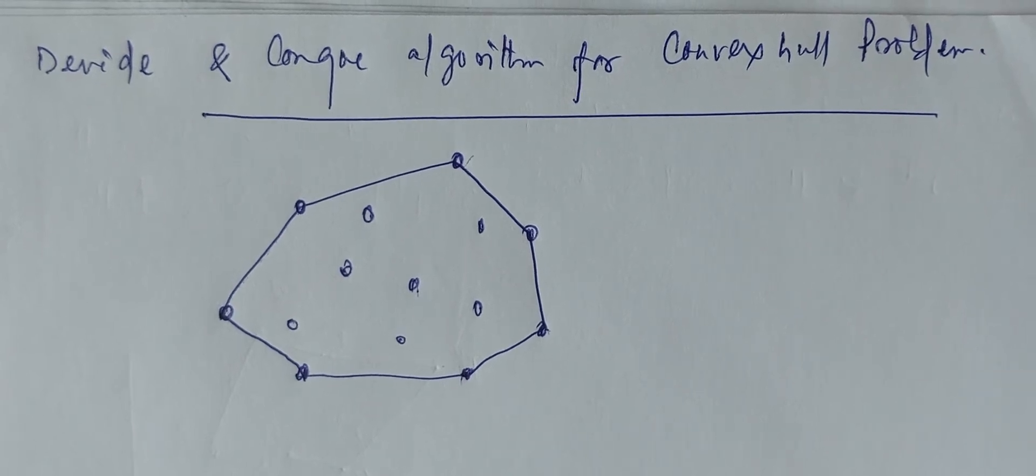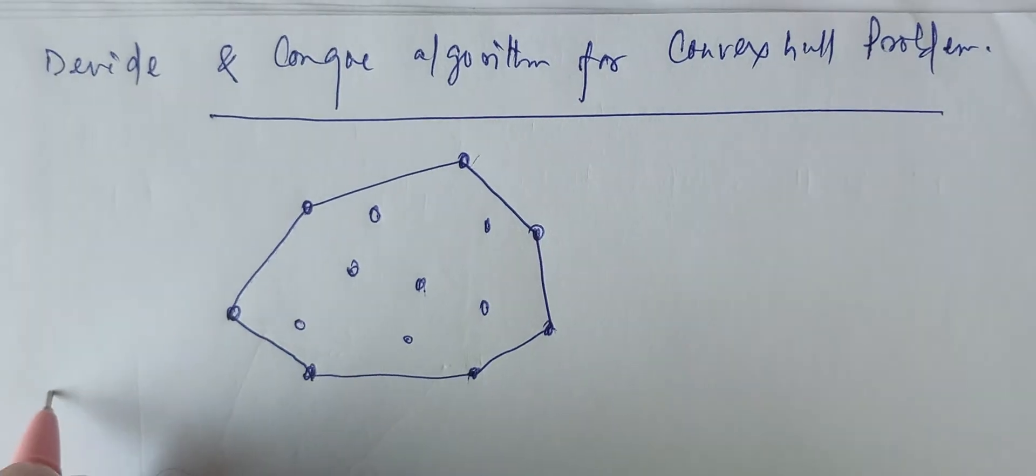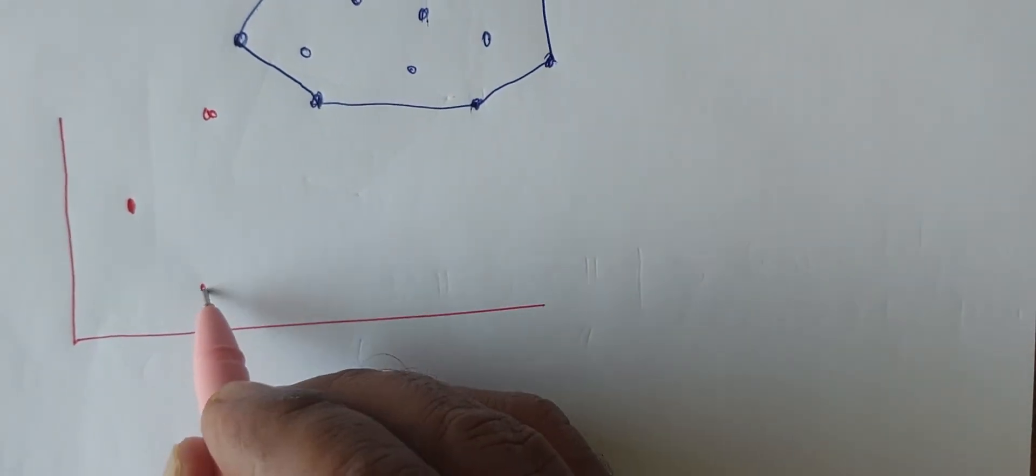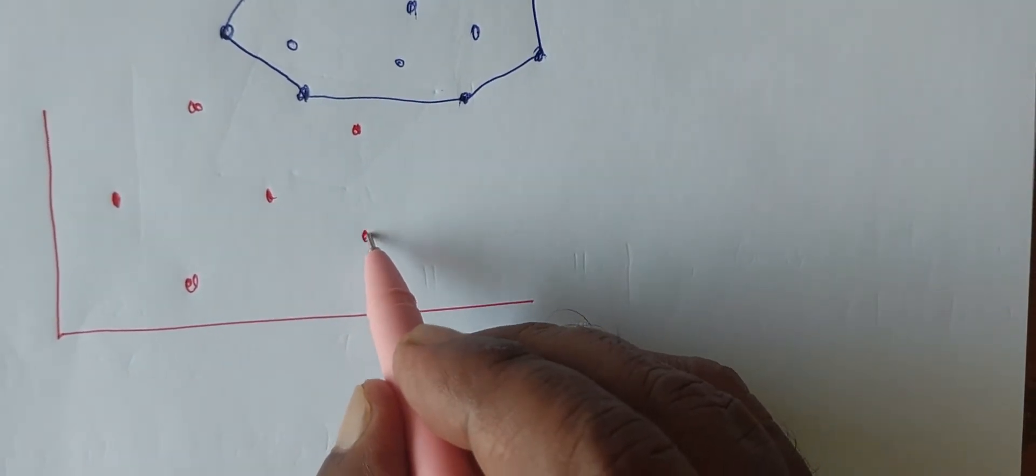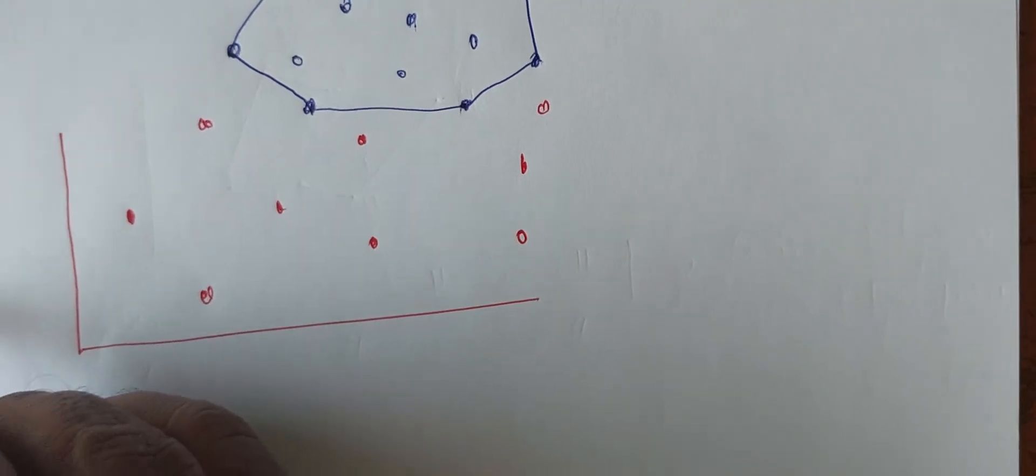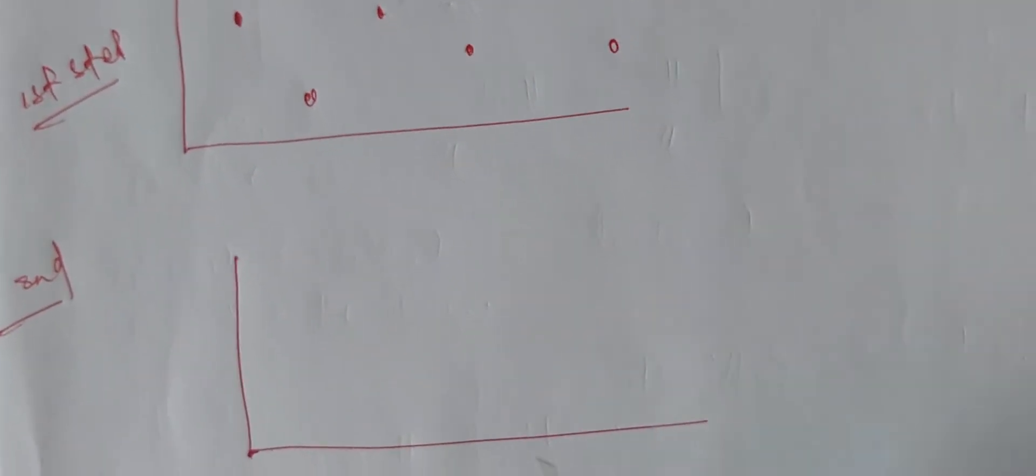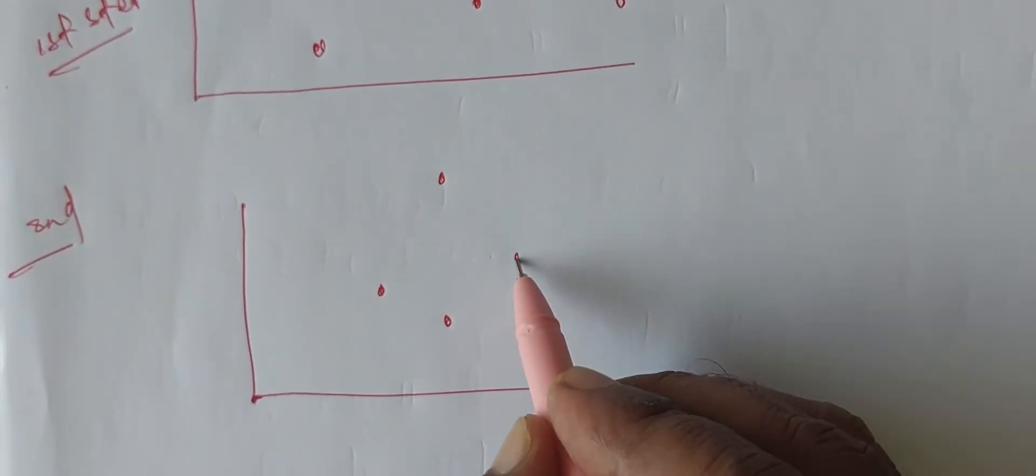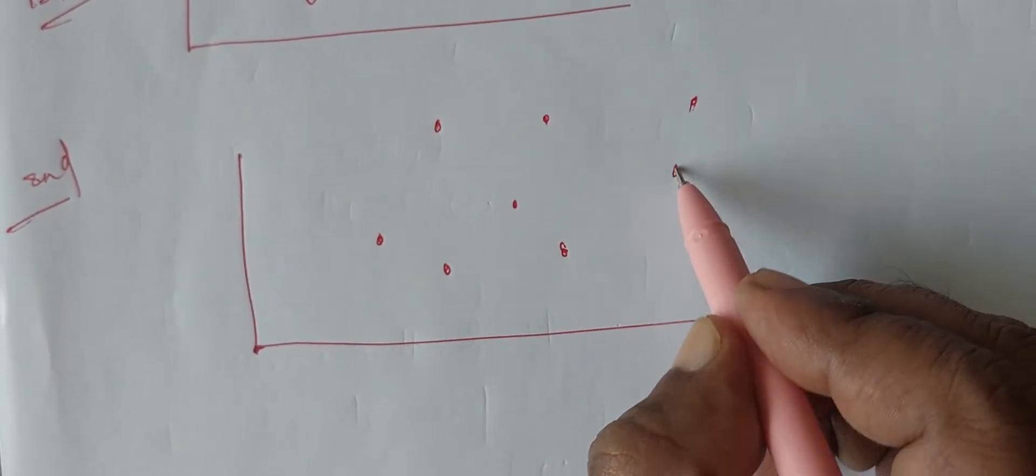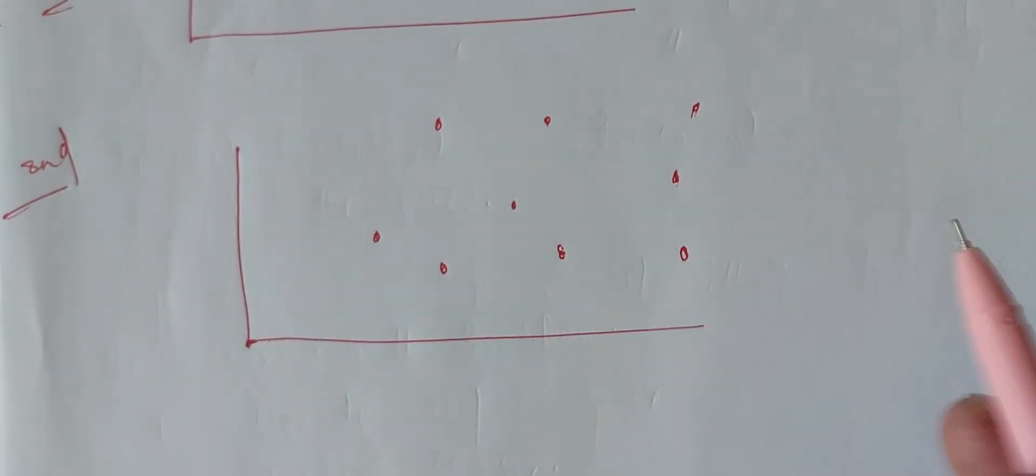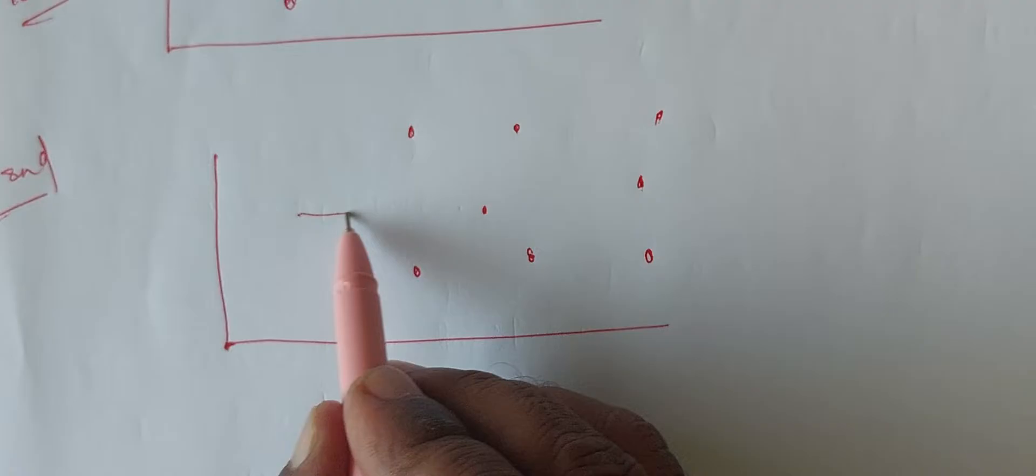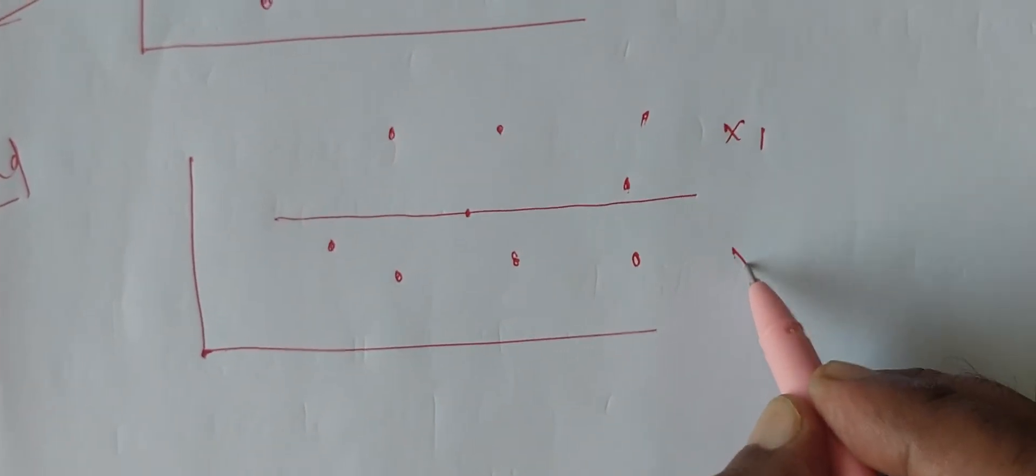By using the divide and conquer algorithm, suppose we are having some points. We have to use divide and conquer algorithm so that we will get the shape. In the second step, we will divide into two parts. This will be x1 part and this will be x2 part.